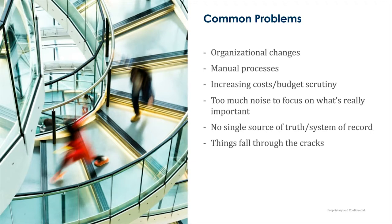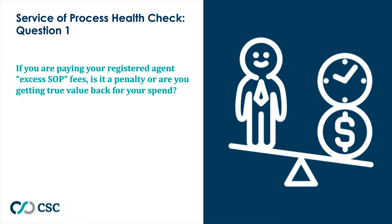A lot of organizations have some, or in some cases all, of these challenges. So let's jump into the first health check question, which deals with excess service of process. In the registered agent world, there's a concept called a unit of representation — best described as an entity doing business in a state. One entity in 10 states equals 10 units of representation; two companies in 10 states equals 20 units.